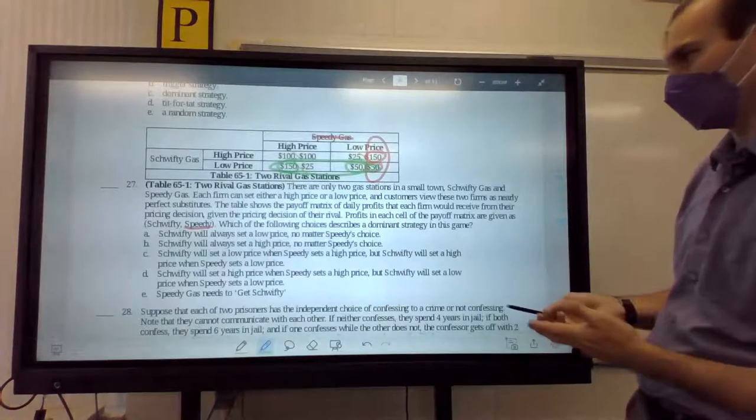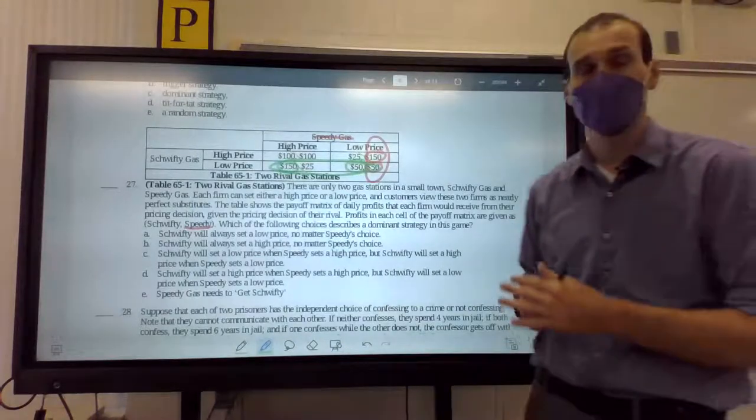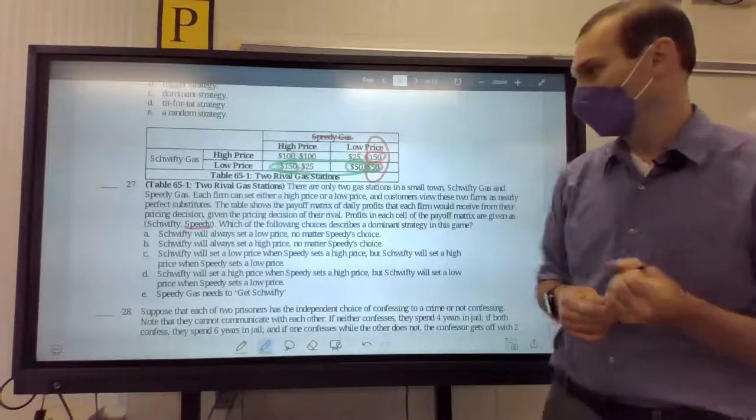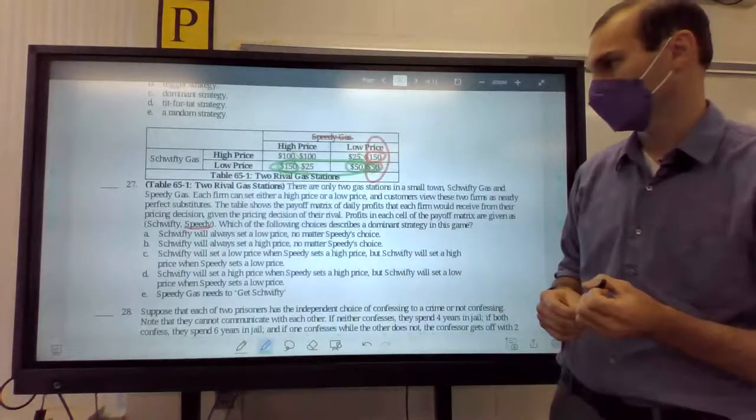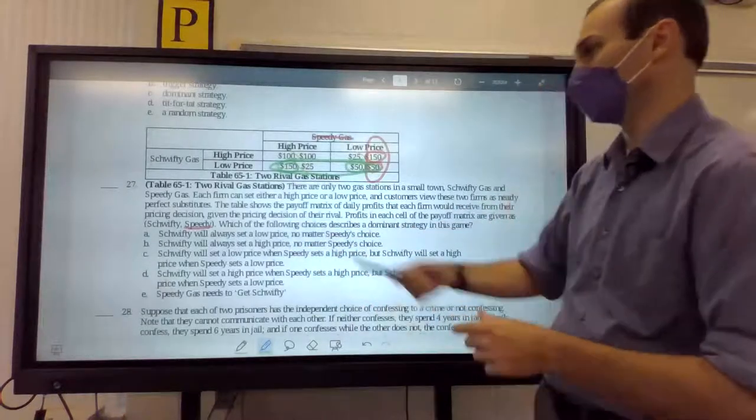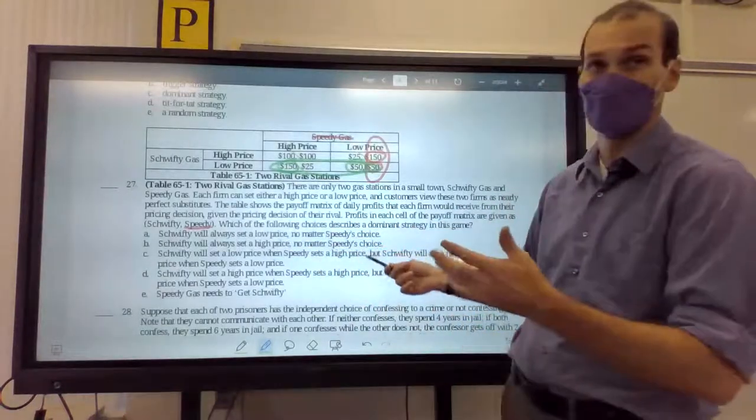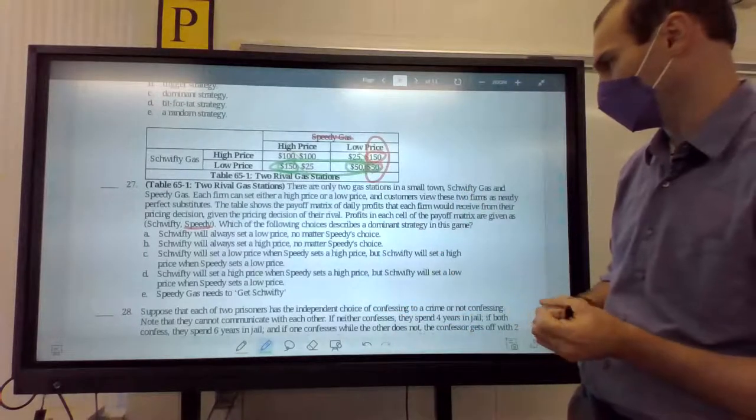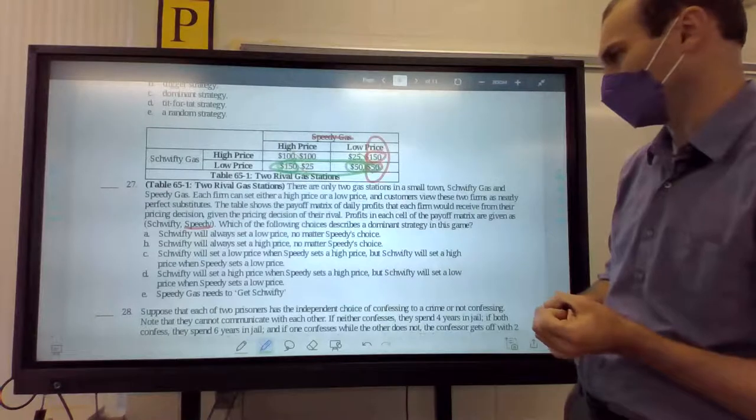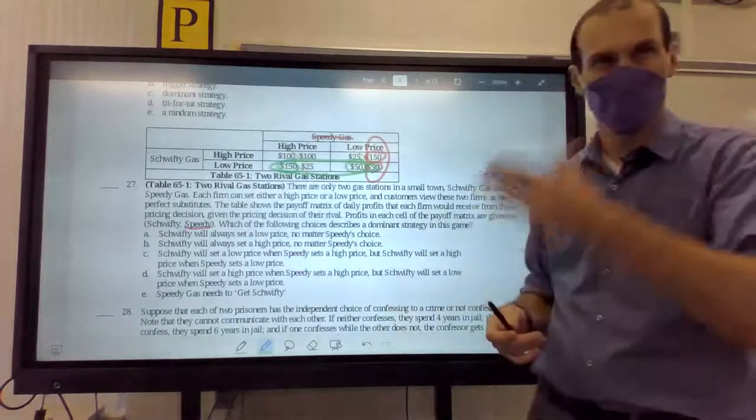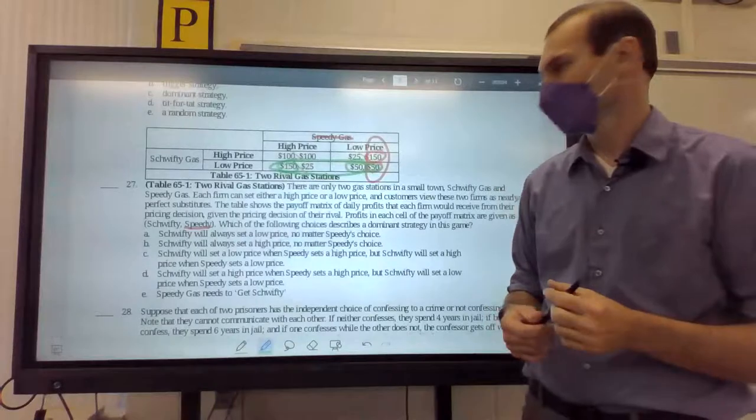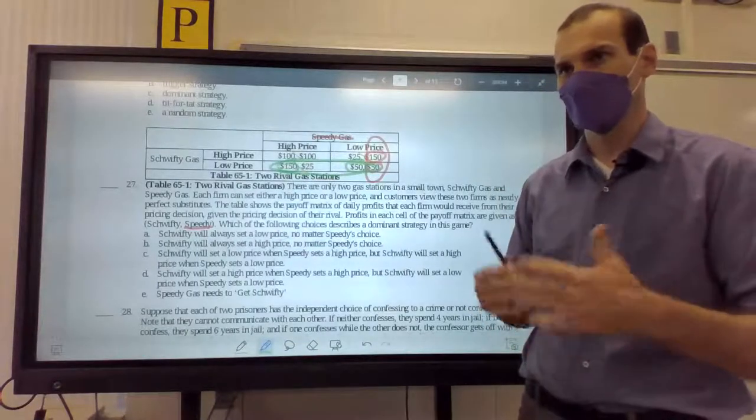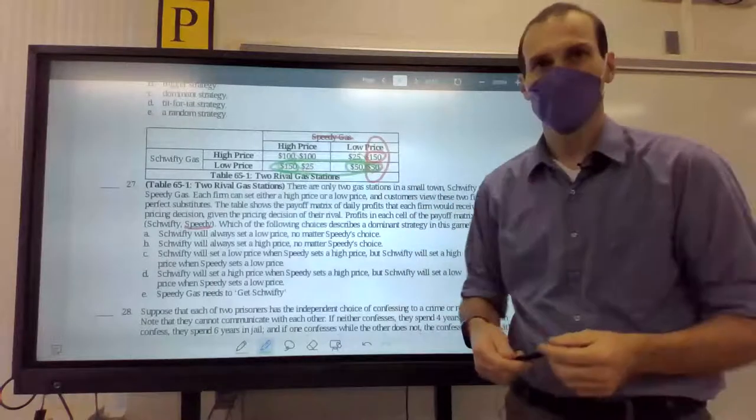So, if we look at this, Schwifty will always set a low price no matter of Speedy's choice. Yes, because Schwifty has a dominant strategy. But don't both of them? They do, but is that an option? Oh, no. Schwifty will always set a high price. No, Schwifty will set a low price when Speedy sets a high price. No, Schwifty will always have a low price. And Schwifty will set a high price when Speedy gets a high price, but Schwifty will set a low price when Speedy gets a low price. Nope. Low, low, low, low, low. What does it do? Oh, it deals with the Cromulonian paradox that sometimes you've got to get Schwifty if you want to survive the game.